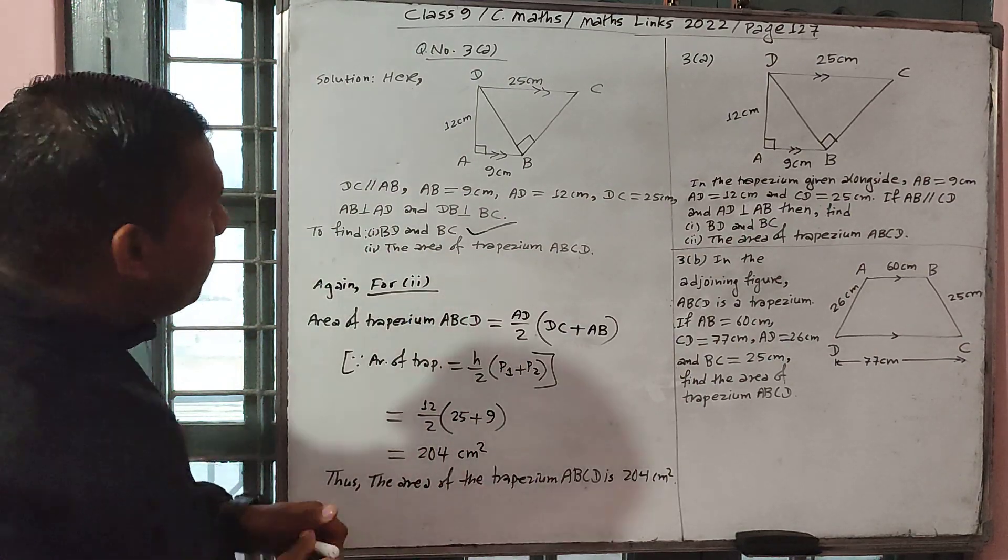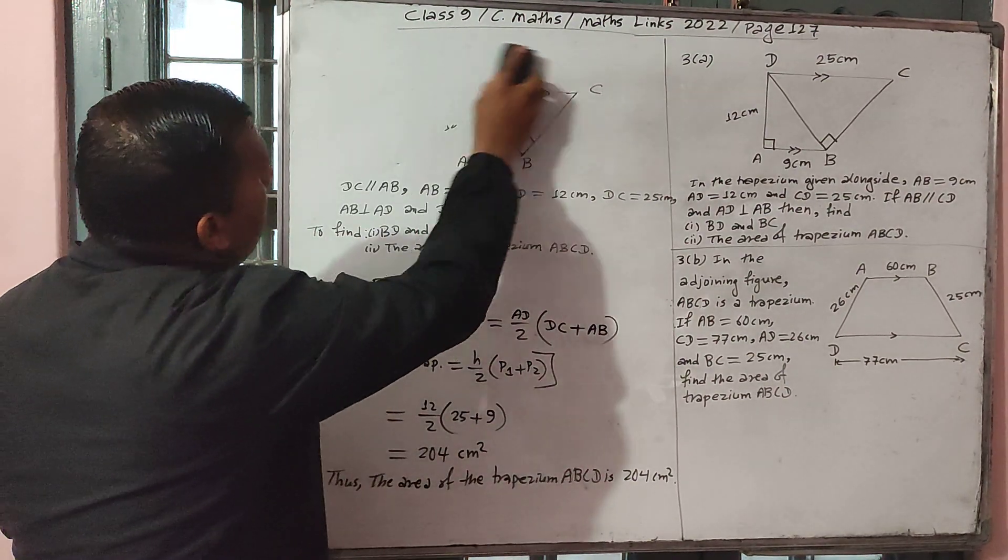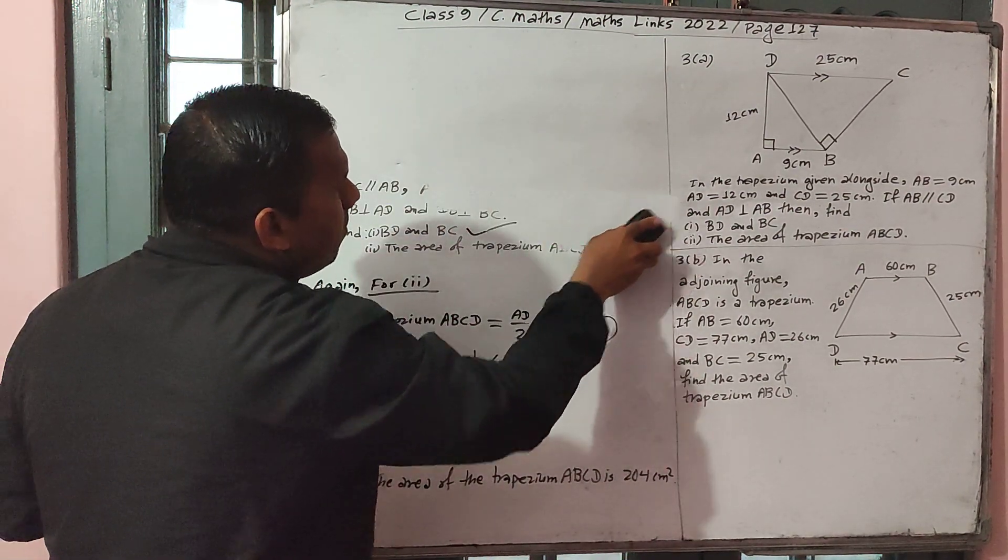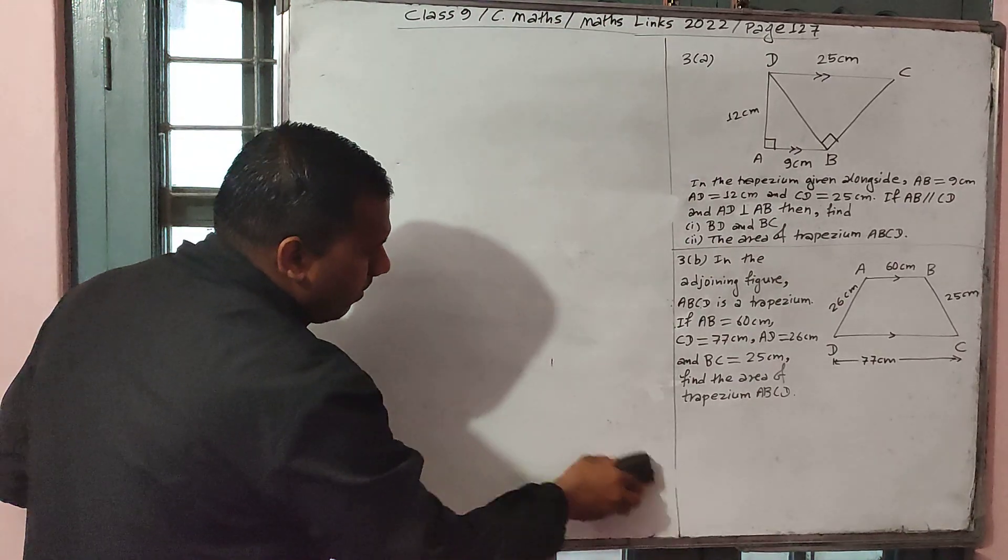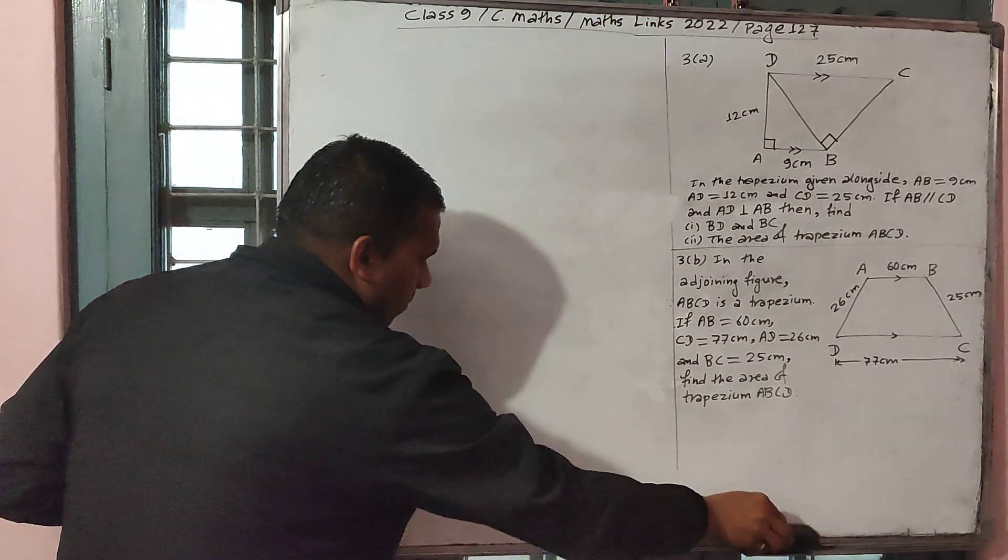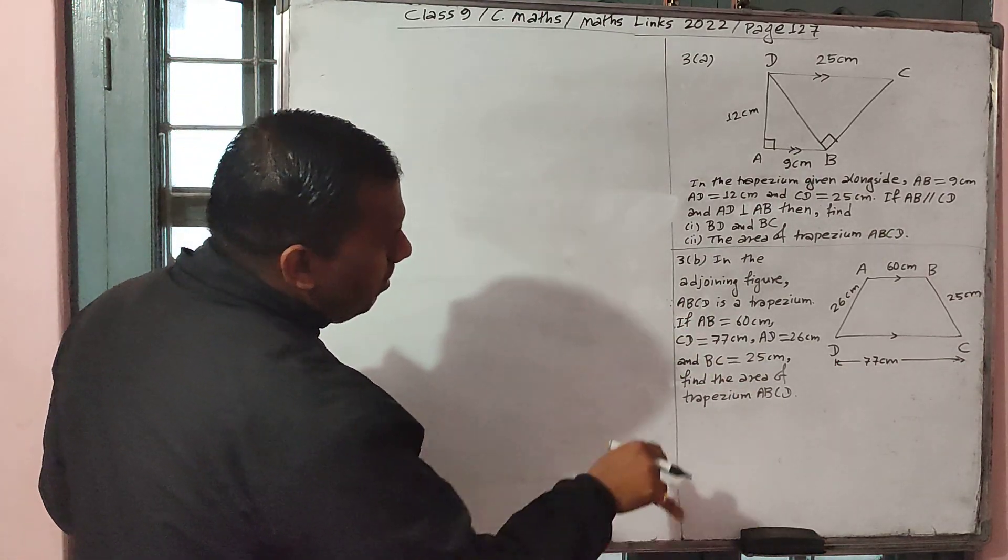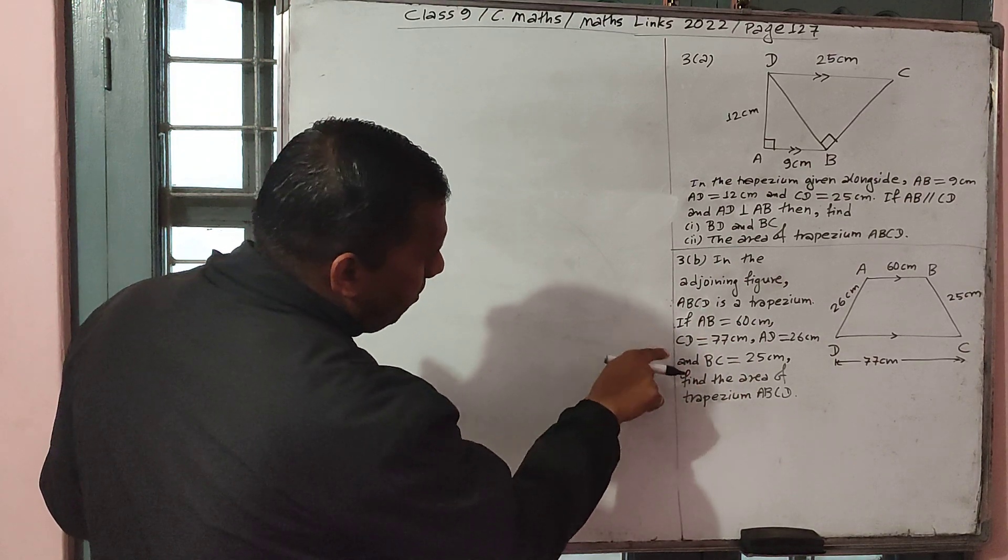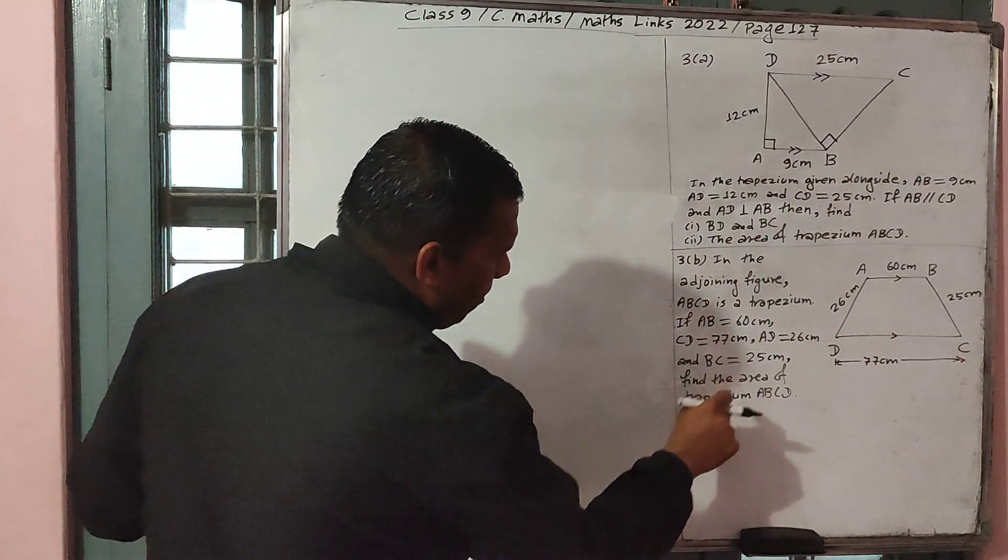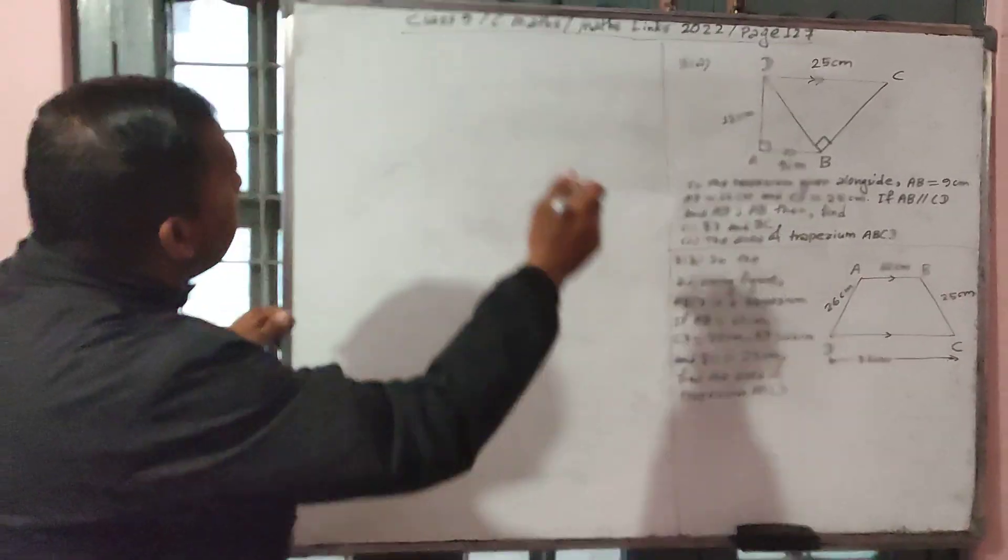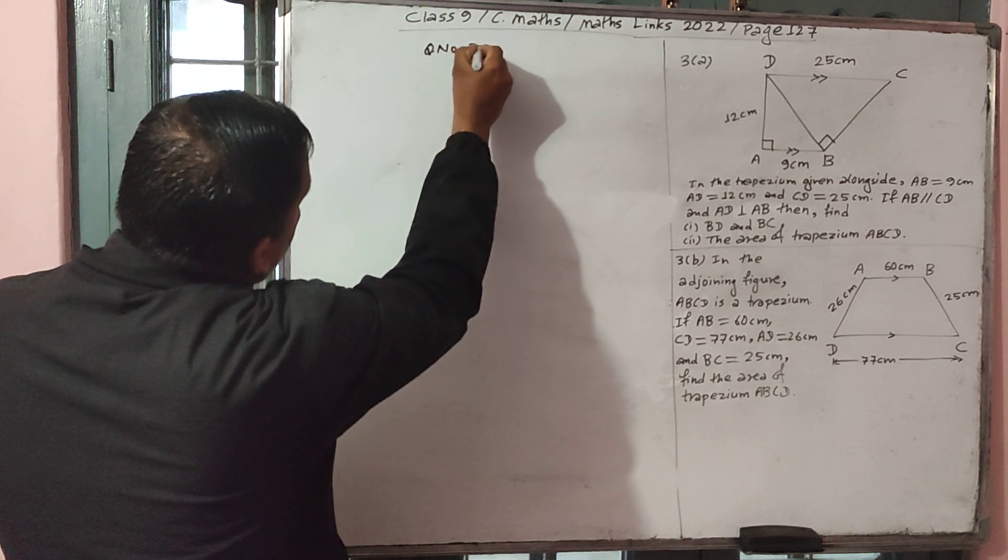Okay students, we have finished question number 3A. Now we go to next question, 3B. In the given figure, ABCD is a trapezium. If AB 60 cm, CD 77 cm, AD 26 cm, and BC 25 cm, find the area of trapezium ABCD.